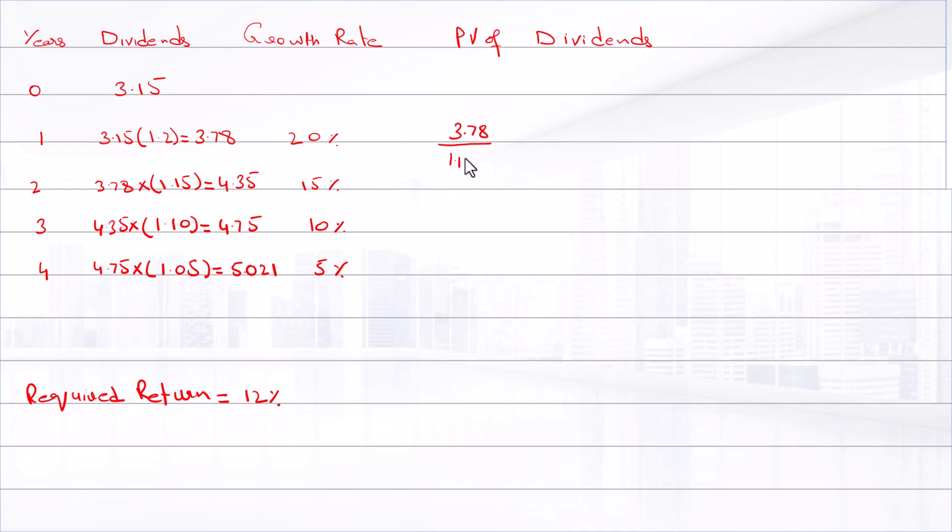Then 4.35 divided by 1.12 raised to power 2, that is equal to $3.465. And 4.78 divided by 1.12 raised to power 3, that is equal to $3.404.